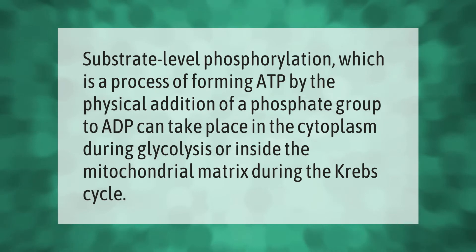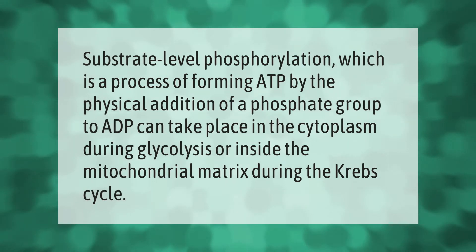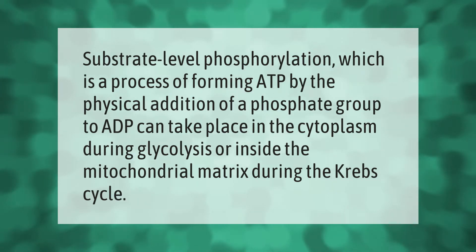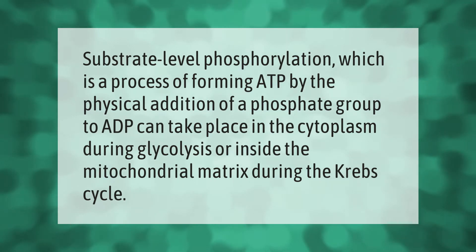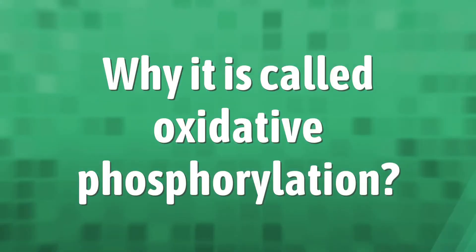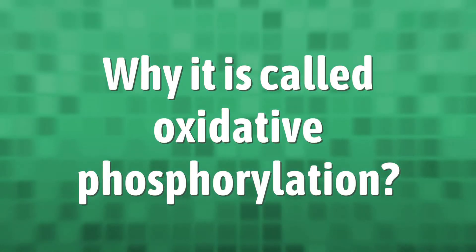Substrate level phosphorylation is a process of forming ATP by the physical addition of a phosphate group to ADP. This can take place in the cytoplasm during glycolysis, or inside the mitochondrial matrix during the Krebs cycle.